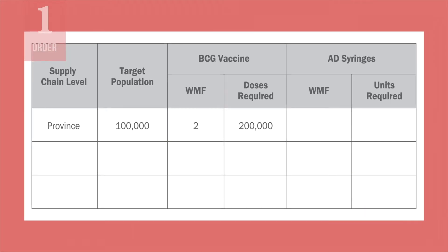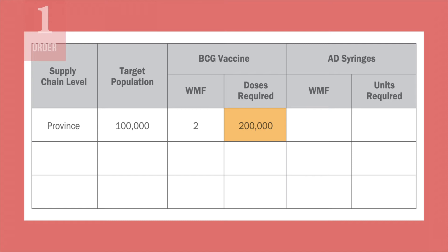Let us look at an example. Say you are ordering the BCG vaccine for a target population of 100,000 infants. The wastage rate for the BCG vaccine is 50%, so the WMF is 2. You multiply your target population by 2 to get 200,000 doses required for the year. If you apply the bundling policy, that means you will need to order the corresponding number of AD syringes for that target population. Since the wastage rate for syringes is 10%, or a WMF of 1.11, you will order 111,000 syringes.